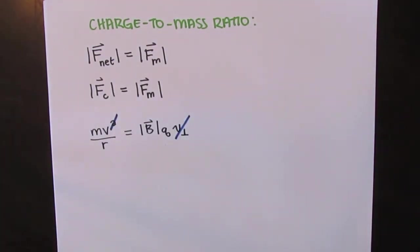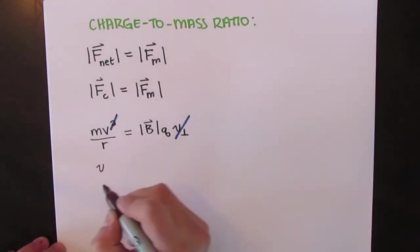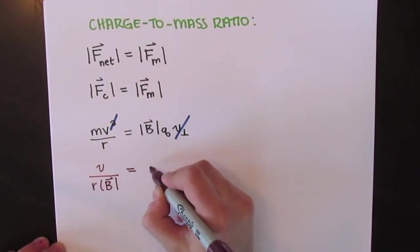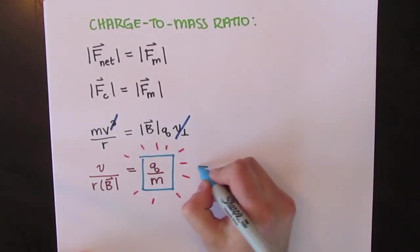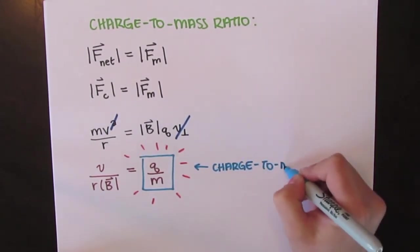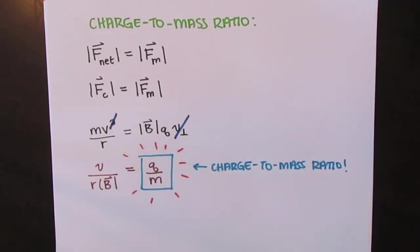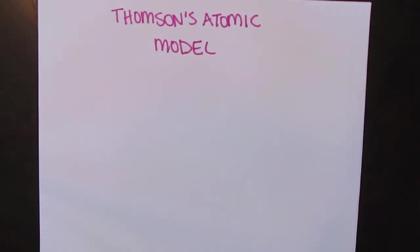We can cancel out the velocities, and when we rearrange the formula, the charge to mass ratio equals the velocity of the electron divided by the radius and the magnitude of the magnetic field. Thomson determined this value to be negative 1.76 times 10 to the 8 coulombs per gram.